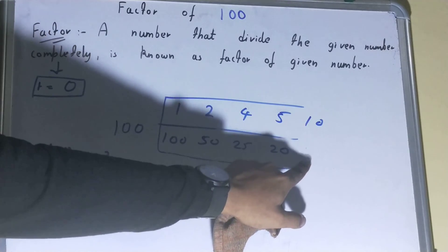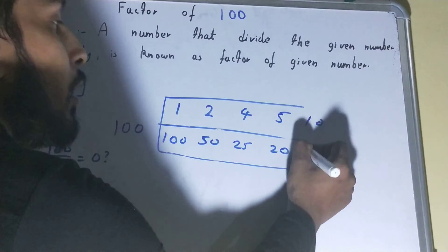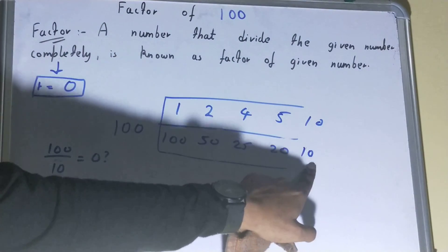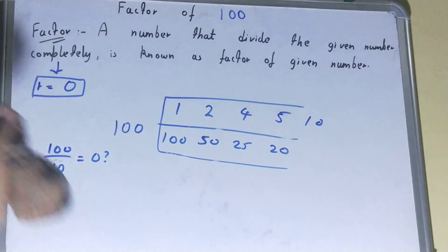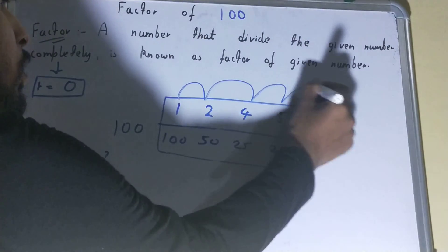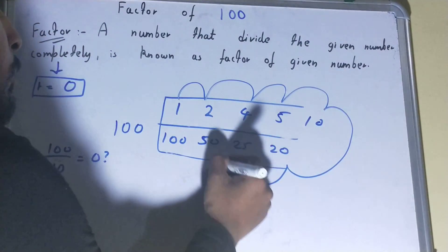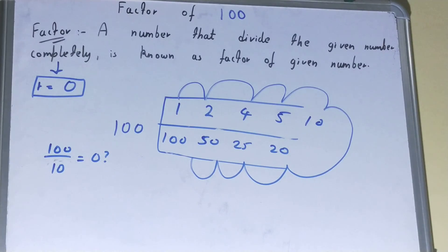We've reached the lower part of the factors, so we don't need to calculate any further. The total list of factors of 100 is: 1, 2, 4, 5, 10, 20, 25, 50, and 100. This is how you can find the factors of 100 using the factor pairs method. If you liked the video, please hit the like button and consider subscribing.